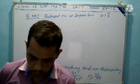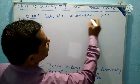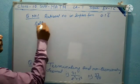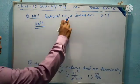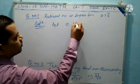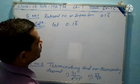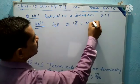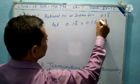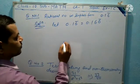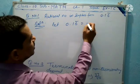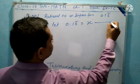I have taken the question: rationalize the number in simplest form, that is 0.16 recurring. The solution is to express it in the form of a rational number. Let 0.1666... (that is 0.16 recurring) be x — equation 1. This value, 0.166..., is the recurring value of x.